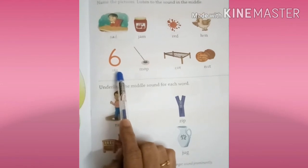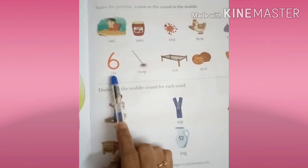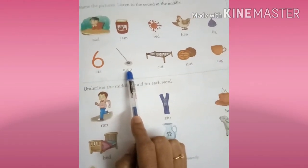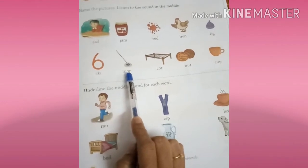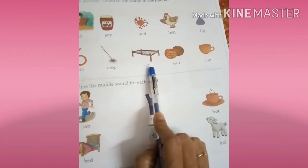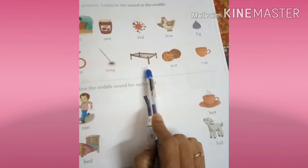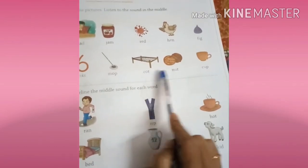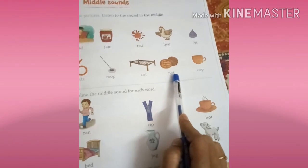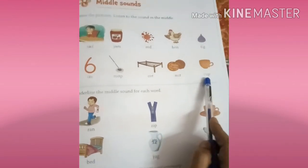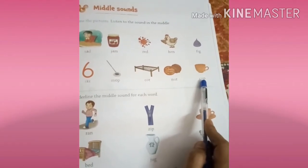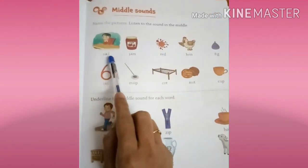S-I-X, six. M sound is M, O sound is O, P sound is P. M-O-P, mop, okay. C sound is C, O sound is O, T sound is T. C-O-T, cot, okay. N sound is N, U sound is U, T sound is T. N-U-T, nut. C sound is C, U sound is U, P sound is P. Cup, okay.